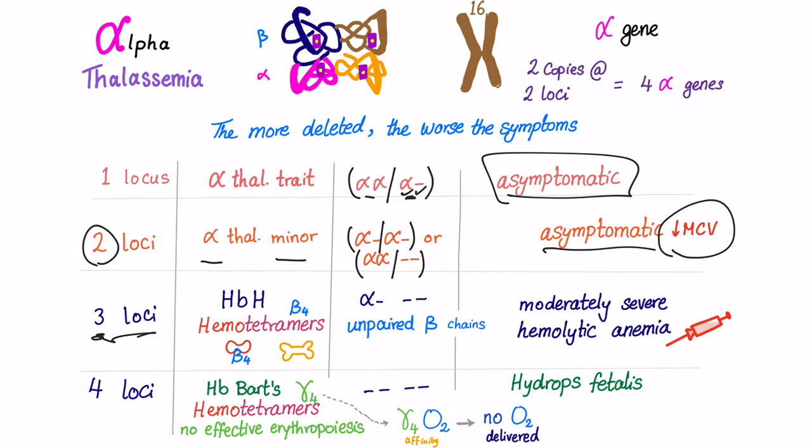Three loci deleted. So three of the alpha are deleted. Beta chains will now be unpaired. They form beta 4 tetramers. We said when globin chains are deleted, hemotetramers are formed. In this case, beta 4 tetramers. They are present in the RBCs but not in the bone marrow. This is hemoglobin H or beta 4 tetramers. What are the symptoms? Moderate to severe hemolytic anemia. So there are symptoms.